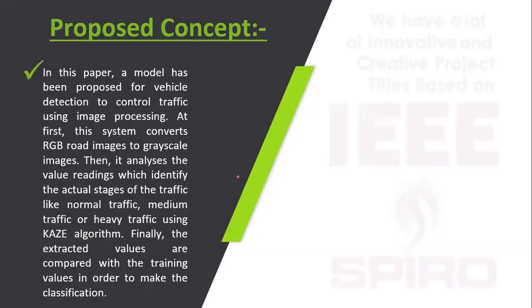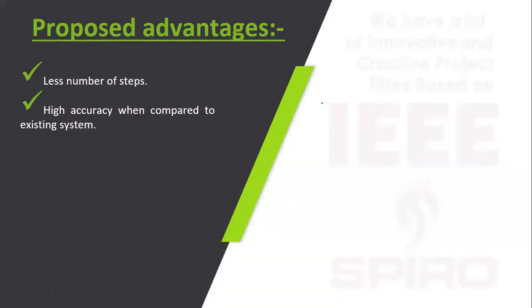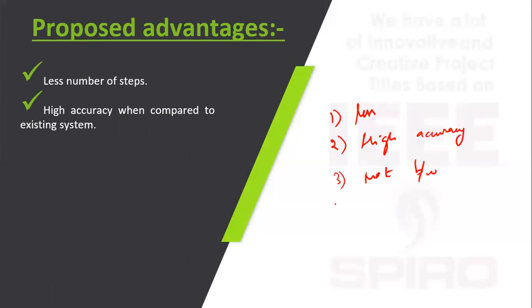In our proposed system we are using the CASE algorithm for detection and traffic density classification. If you use this algorithm it requires less number of steps, and also the accuracy is high when compared to the existing system. Because in our proposed system we do not convert the color image — we directly take the important features from the color images using the CASE algorithm, so it gives actual accuracy.